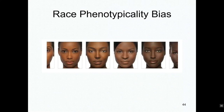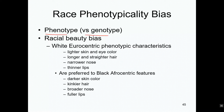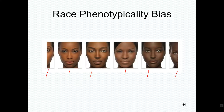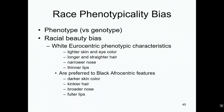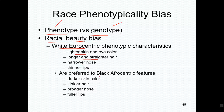Race phenotypicality bias refers to the differences in racial features among African Americans. In biology, a genotype is what gene you have, but the phenotype is how it's expressed. We're talking about the expression of how black you are. This becomes a racial beauty bias in that white Eurocentric phenotypical characteristics — lighter skin and eye color, longer and straighter hair, narrow noses, and thinner lips — are generally preferred over more Afrocentric features such as darker skin, kinkier hair, broader nose, or fuller lips.